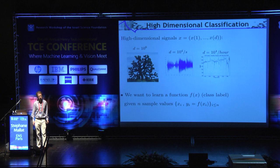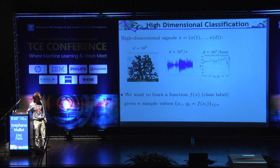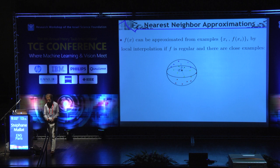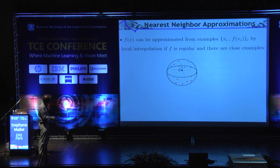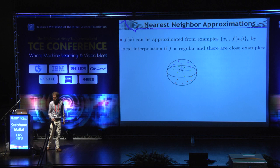Signals can be images, sounds, electrocardiograms, any numerical data. The question behind these problems is: is it possible to learn, under what conditions, and with what kind of algorithms? The problem looks simple — you have examples, you are given a new signal X, and you want to know the value of f(X). The immediate idea is to look at the neighbors and do some kind of nearest neighbor interpolation.